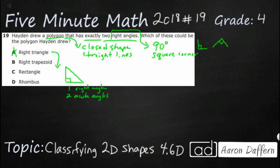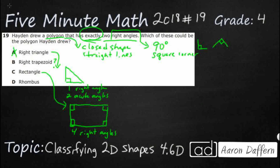Now a right trapezoid — that's kind of an odd one, so let's pretend we don't know what that is. Sometimes it's good to skip something if we're not sure. Let's come over to our rectangle. A rectangle has four sides, and what makes a rectangle a rectangle? It's a parallelogram that has four right angles — all four corners are 90 degrees. So it definitely has at least two, but we're looking for exactly two. Unfortunately it's got too many.